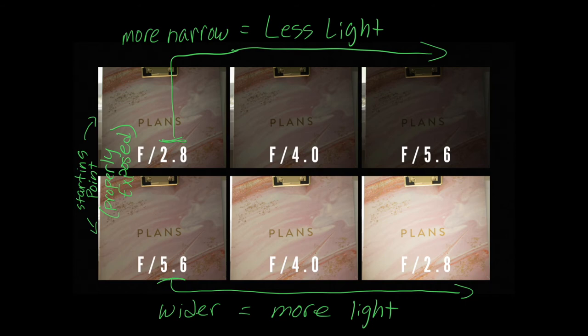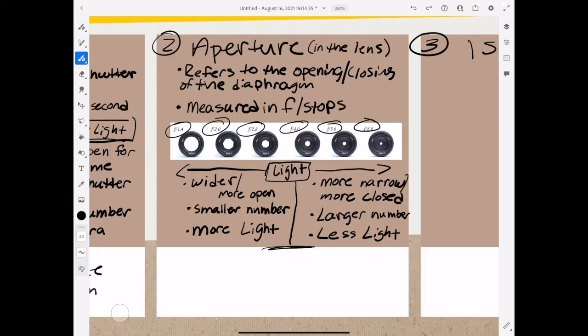We'll go over more about how you adjust all three of the pillars—which is again, shutter speed, aperture, and ISO—how you work with all three of them at the same time to get proper exposure. We'll go over that later. But there's a recap of how aperture affects light.